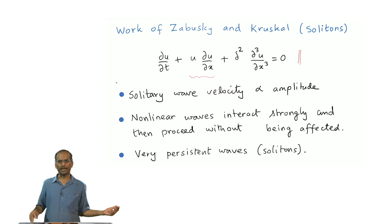In 50s and 60s Zabusky and Martin Kruskal launched a program of solving some of these equations numerically to understand their effects and ramifications. Solitary waves, which are the solutions of these equations, in the case of solitary waves the velocity is proportional to amplitude, again a result that is known since the work of John Scott Russell. Non-linear waves interact strongly and proceed without being affected. Which means that if I have one non-linear wave coming in this direction and another non-linear wave coming in this direction, they would interact when they come closer. Many things happen when they interact, and after the interaction this wave would move as though nothing happened and this wave would move as though nothing happened.